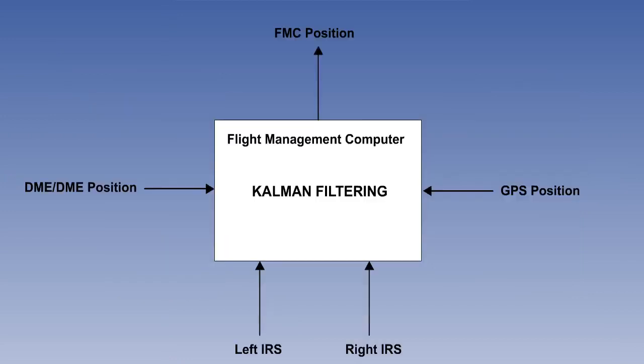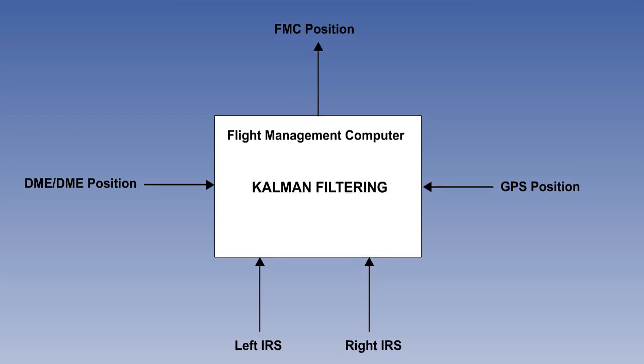The other was the idea of using the INS or IRS as only one component of a multi-sensor system, and to have a method of extracting the most probable position from a combination of all of the inputs. This multi-sensor system is part of the flight management system, or FMS for short. And the method of establishing the most probable position from a variety of inputs is called Kalman filtering.